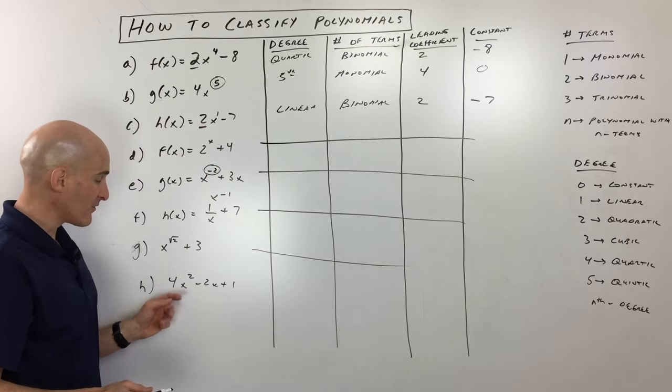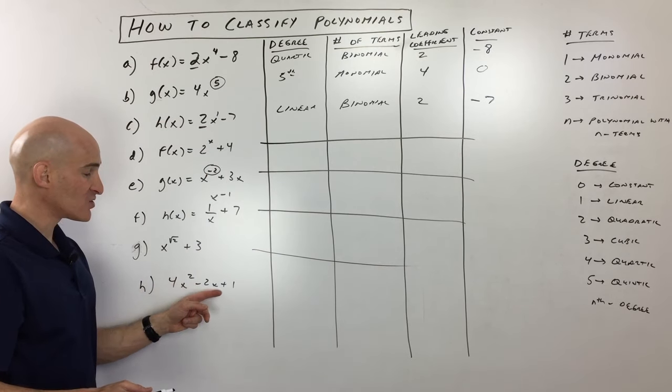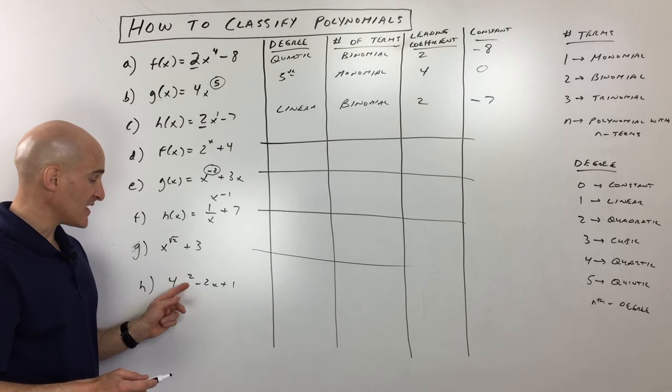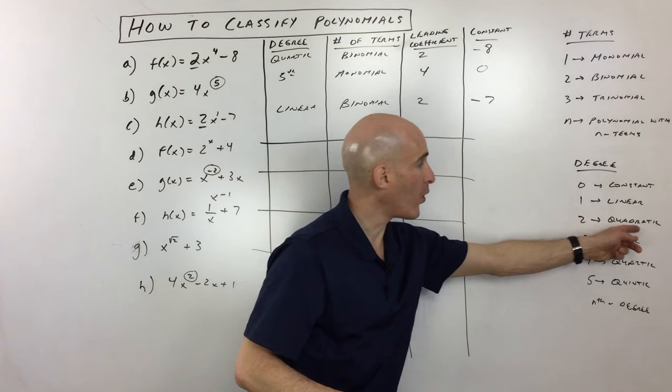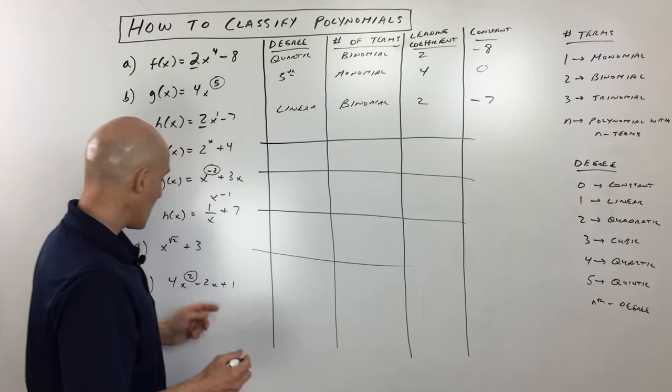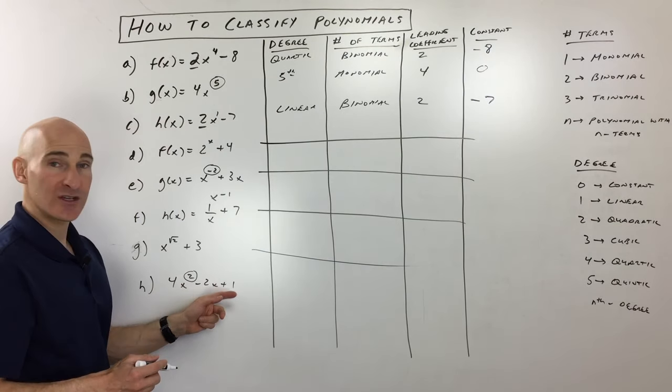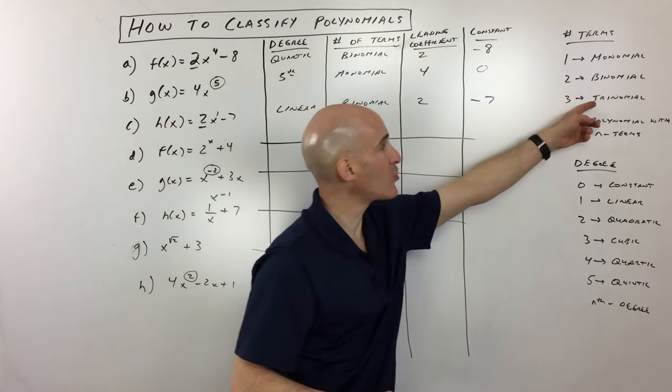And then the last one here, we've got 4x squared minus 2x plus 1. This one, you can see it's a second degree. That's the highest power. Second degree we call a quadratic. And you can see that it's one, two, three terms, three groups. We call that a trinomial.